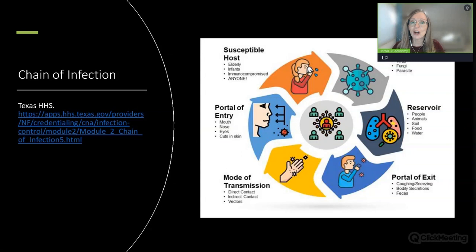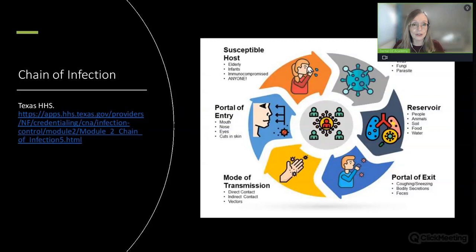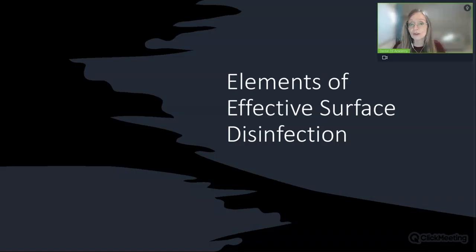If someone is coughing, sneezing, using the restroom, and not washing their hands, that is a primary source of cross-contamination. Mode of transmission can be through direct or indirect contact, and vectors include animals or insects. Portal of entry—the mouth, nose, eyes, or cuts in the skin—allows the pathogen to reenter a new host. We need a susceptible host, and that can be anyone, but older adults, infants, and the immunocompromised are at greatest risk.